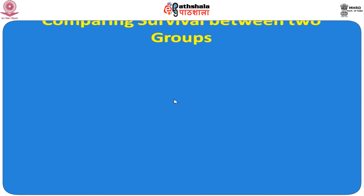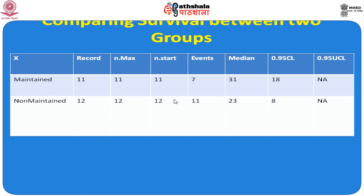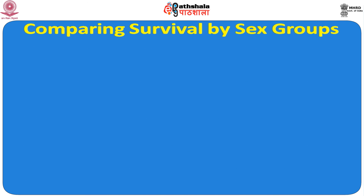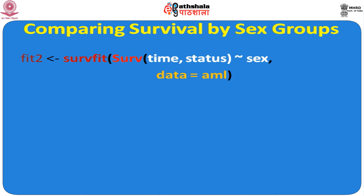Comparing survival between two groups: summary information includes the maximum recorded follow-up, number of events during the study, and median survival — median survival for the maintained group and for the non-maintained group — along with 95% confidence intervals: 18 and 8 as confidence interval representatives for maintained and non-maintained groups respectively.